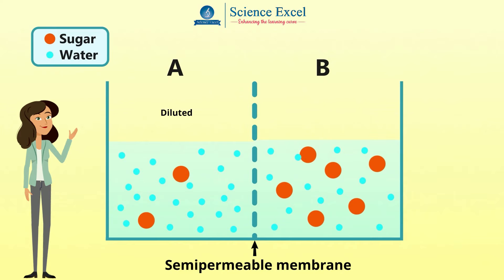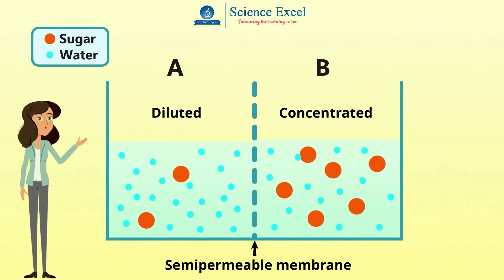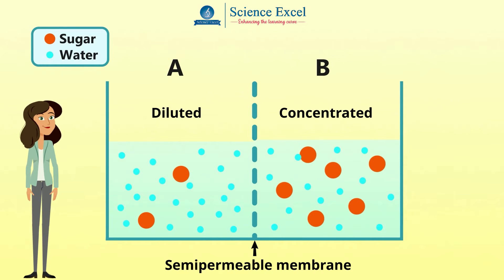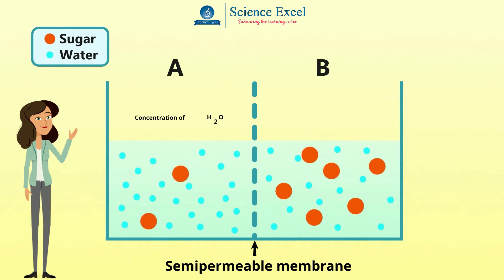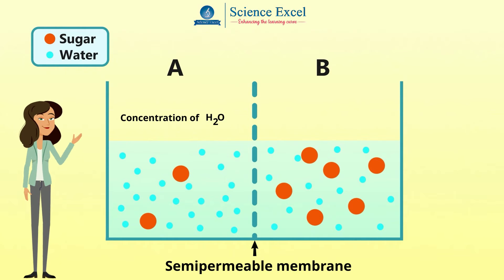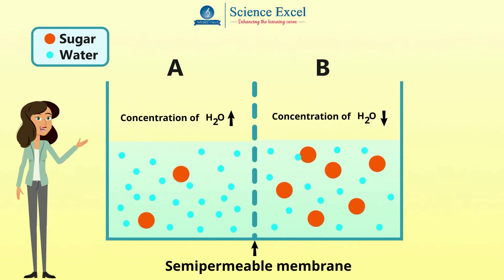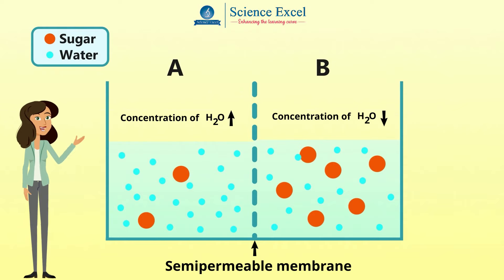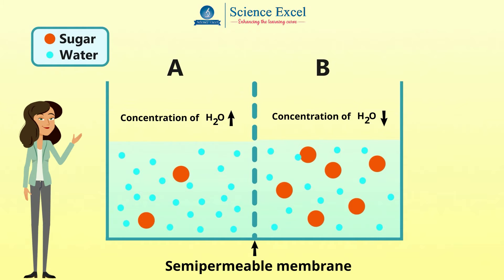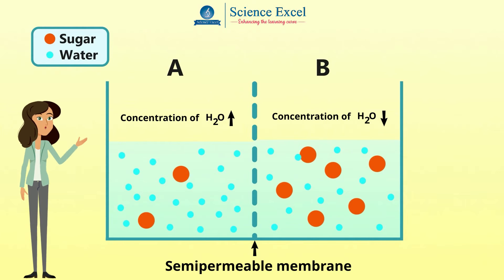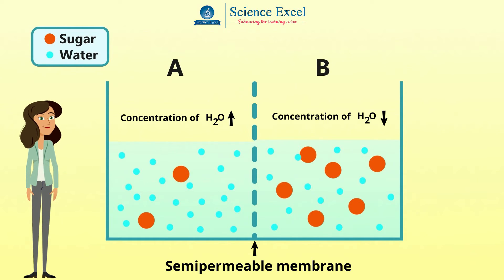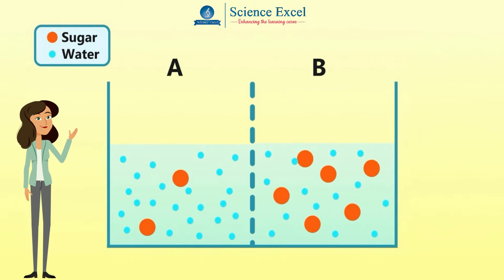We add sugar solutions of two different concentrations on either side of the membrane: a dilute sugar solution on side A and a concentrated sugar solution on side B. This means the concentration of water on side A is obviously more compared to side B. Sugar molecules are many times larger than water molecules and hence cannot pass through the membrane, whereas water molecules can.